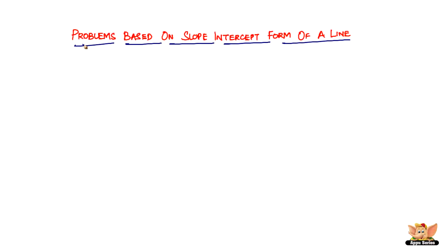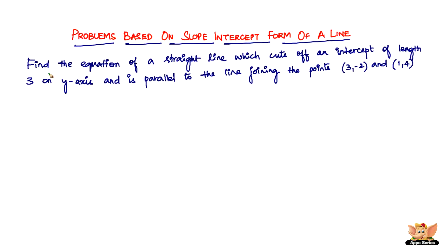In this video, let us continue to solve more problems based on slope-intercept form of a line. Here we've got another problem which says, find the equation of a straight line which cuts off an intercept of length 3 on y-axis and is parallel to the line joining the points (3,-2) and (1,4).